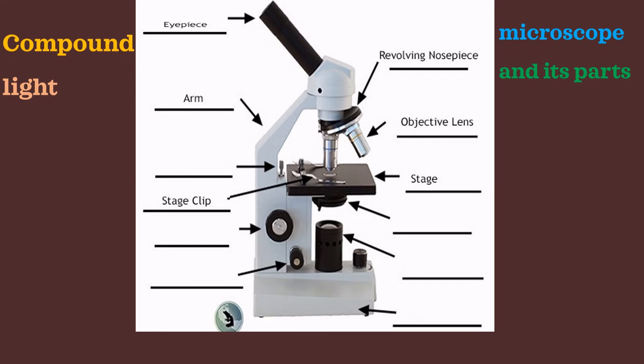The stage clip holds the slide in place. The coarse focus moves the tube up and down to produce a rough focus of the image. There is also a fine focus that moves the tube by very small amounts to produce a sharp focus of the image.